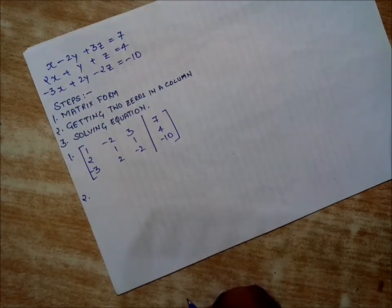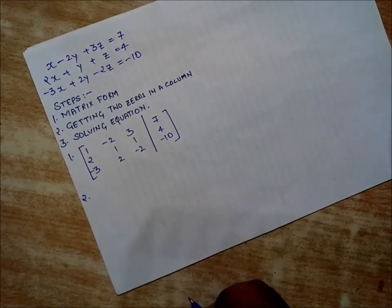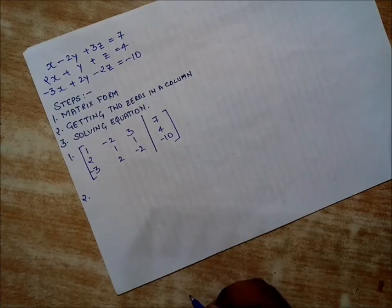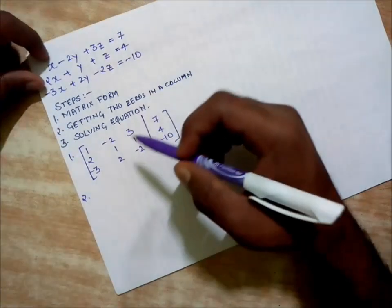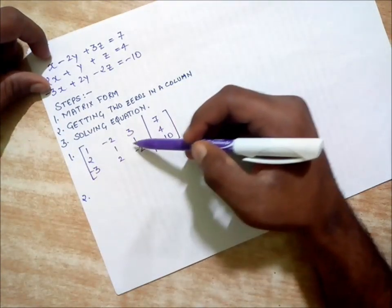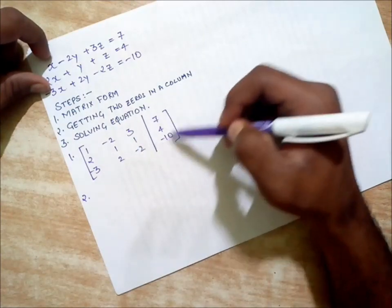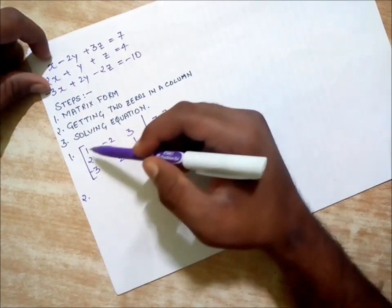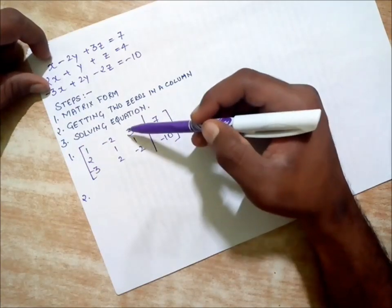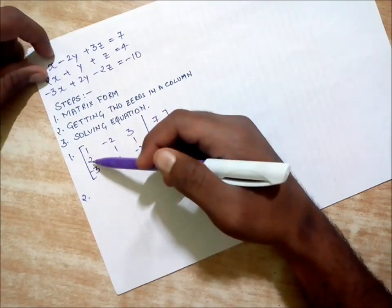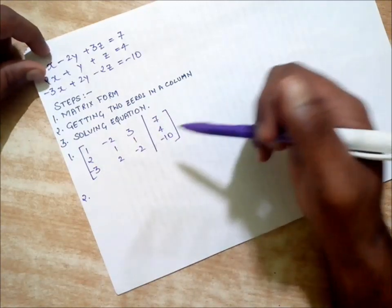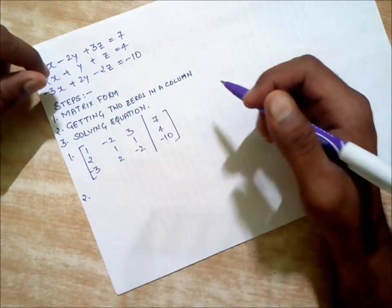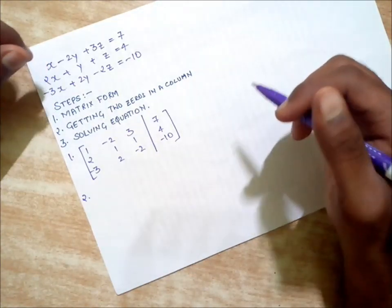Let's get to step number two. Step two says we need to get two zeros in a column. What we are going to do is select any of the columns which can easily give zeros. We will be looking at these three columns, not this one because these are the constants. Among these three columns, we will create at least two zeros in any of them.